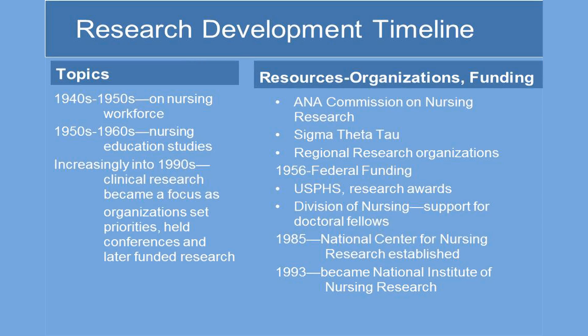Let's look now at the development of research for knowledge for practice. Theory and research go together to create knowledge for practice — we are accustomed to the image of the double helix. The timeline for nursing research development shows both topics and resources in parallel. In the 1940s and 50s, research was mainly on nursing workforce; the 1950s and 60s on nursing education studies. Increasingly into the 1990s, clinical research became a focus as organizations set priorities, held conferences, and later funded research.